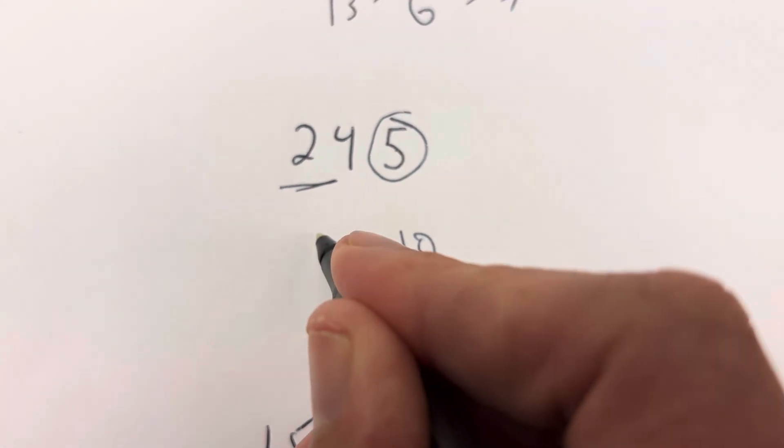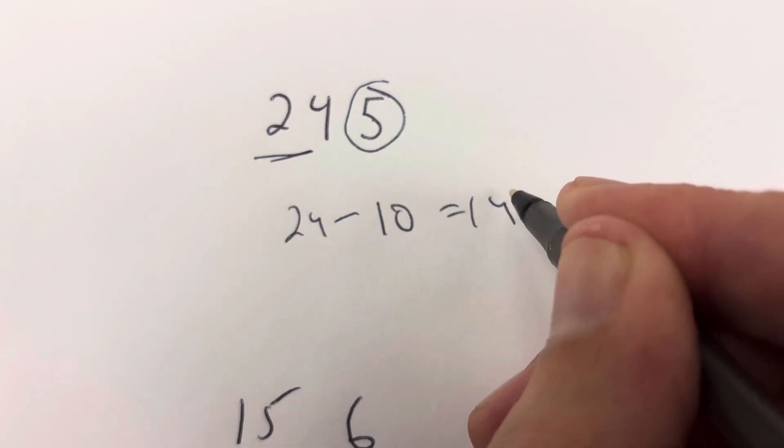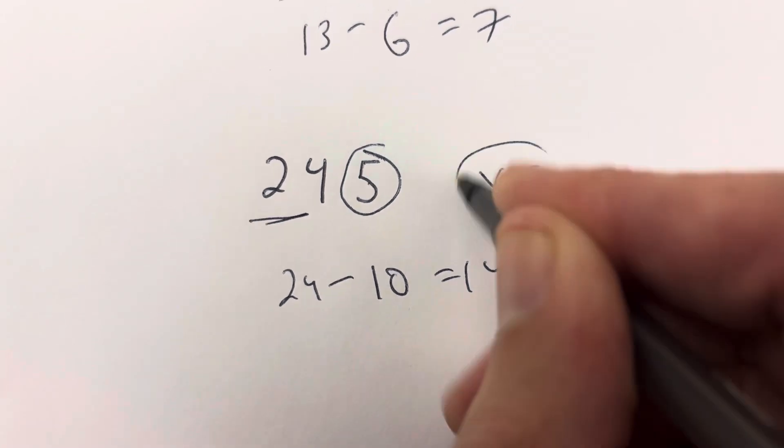And then write what's before it, so you get 24 minus 10 is 14. Is 14 divisible by 7? It is. So the answer is yes.